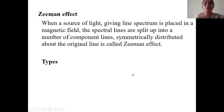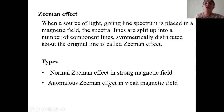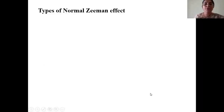Now, there are two types of Zeeman effect. The normal Zeeman effect generally takes place in a strong magnetic field, and the anomalous Zeeman effect takes place when a weak magnetic field is applied. The anomalous Zeeman effect also has different subtypes.